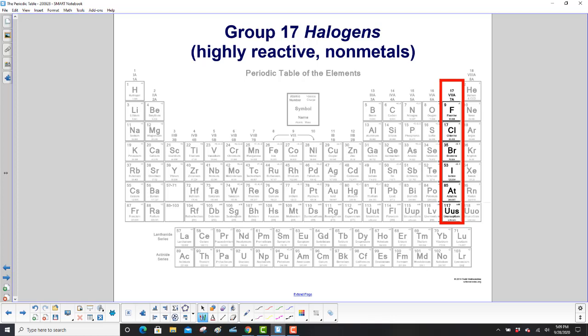Group 17 are the halogens. They are highly reactive, and they are nonmetals. And they start here with fluorine, chlorine, bromine, iodine, astatine, and tennessine. Hard to pronounce that one. So it starts with fluorine here.